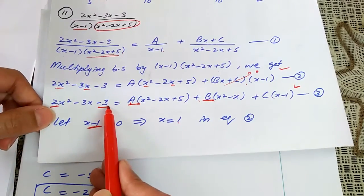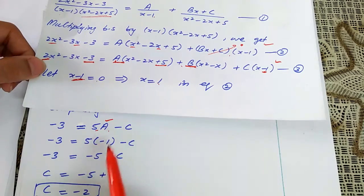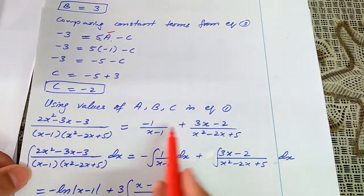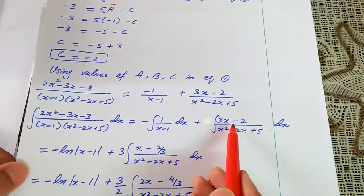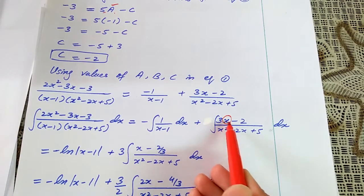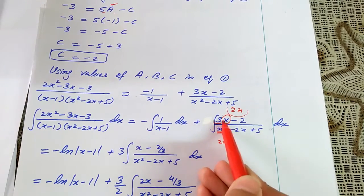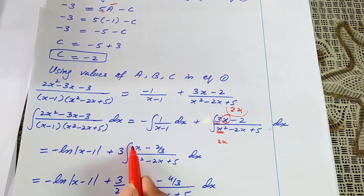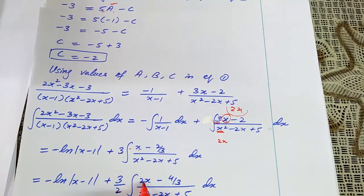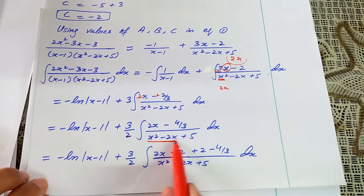Comparing constant terms in equation 3: -3 = 5a - c. Substituting a = -1 gives c = -2. Substituting a = -1, b = 3, c = -2 into equation 1, the integration of -1/(x - 1) gives -ln|x - 1|. For the numerator 3x - 2 over (x² - 2x + 5), take 3 as a common factor, giving 3·(x - 2/3)/(x² - 2x + 5). Multiply and divide by 2 to get 2x in the numerator.